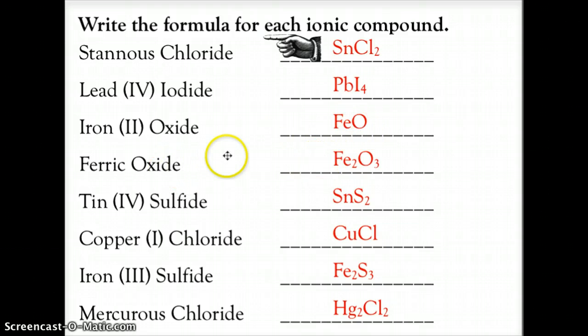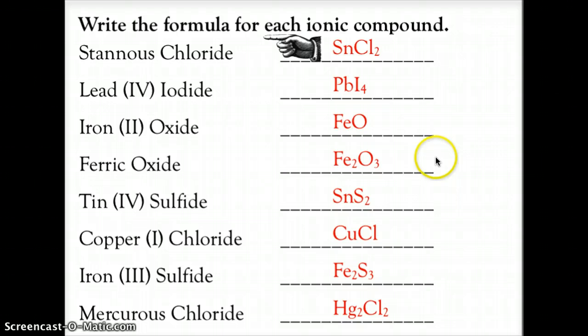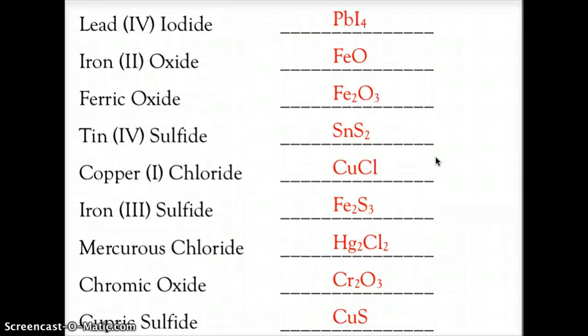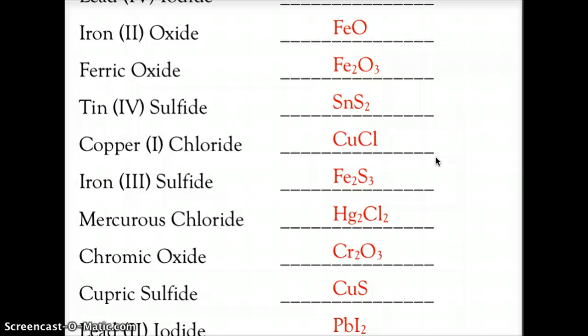Ferric oxide: ferric tells us iron is plus-three, oxide is minus-two, so they balance at Fe₂O₃. Tin(IV) sulfide: tin is plus-four, sulfide is minus-two, so you need two sulfides, making it SnS₂. Copper(I) chloride: plus-one and minus-one go together one-to-one, giving CuCl. Iron(III) sulfide is very similar to ferric oxide, so it would be Fe₂S₃.